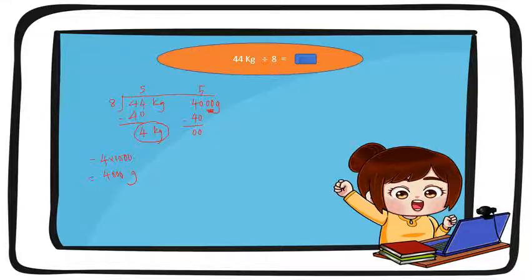Ada dua sifar di sini. Macam cikgu cakap tadi, kita boleh terus bawa naik atas. So, jawapan kita adalah 5 kg 500 gram. Ingat, kalau kita nak convert kepada gram, kita boleh tukarkan. Lima darab seribu sama dengan lima ribu. Tambahlah dengan lima ratus. So, jawapan dia lima ribu lima ratus gram.